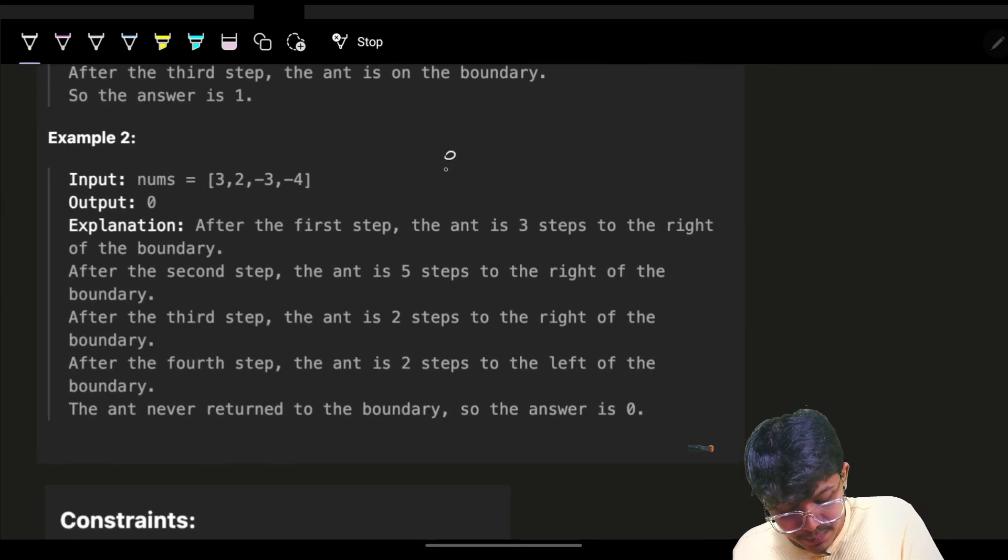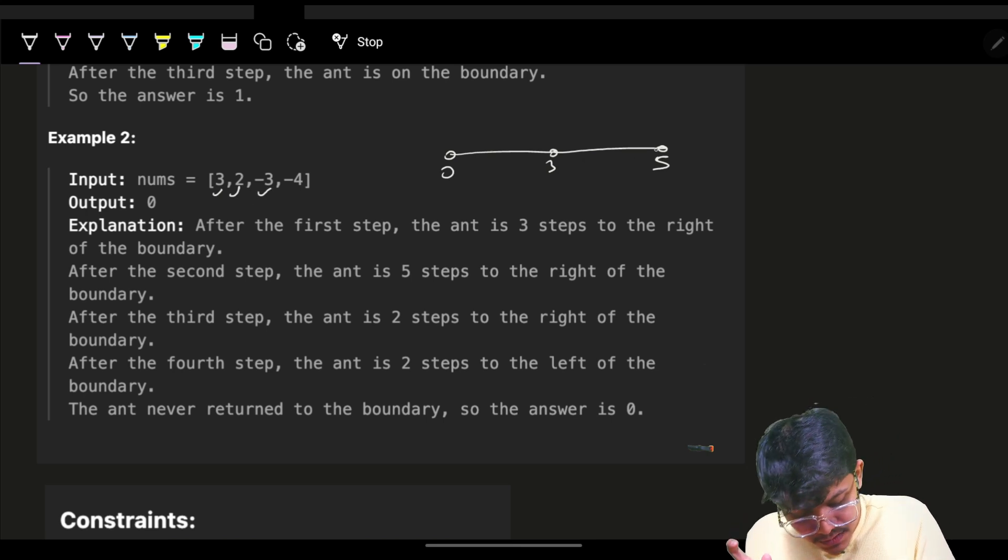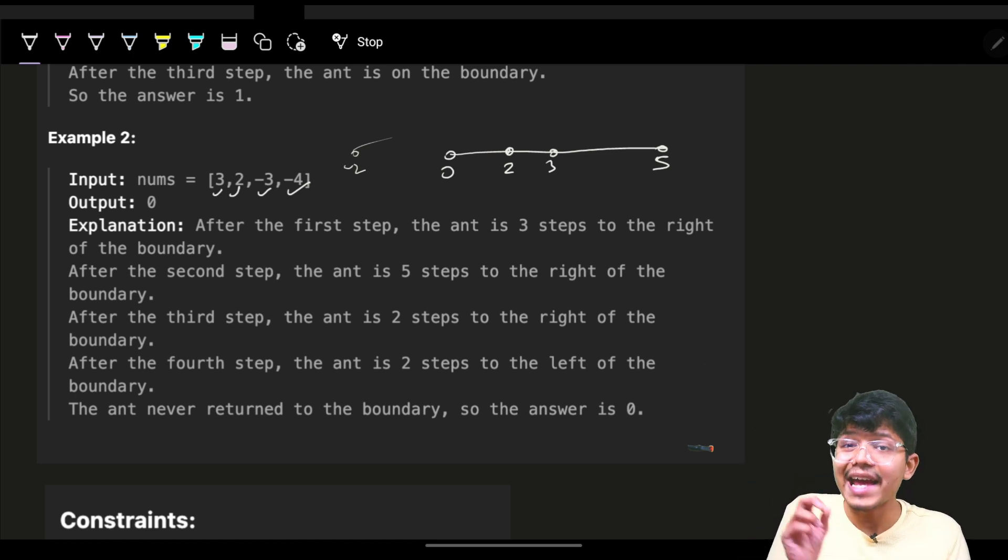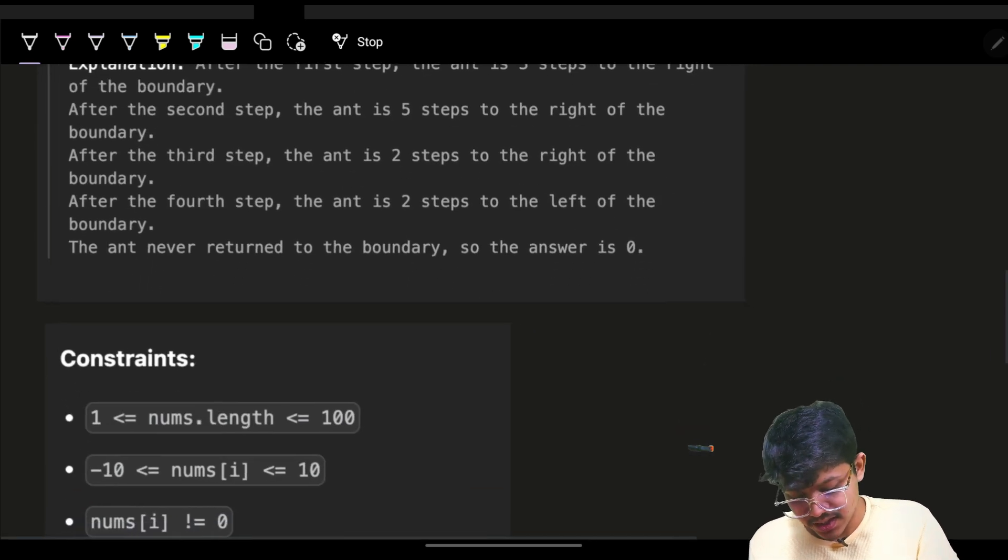In this case, I am initially at zero. I will reach three, then I will reach five after two. Then I will do minus three, so I will reach two backwards. Then I will do minus four, so I will reach minus two. You will see, never did I ever reach zero again. I never reached my boundary ever. So answer is zero.